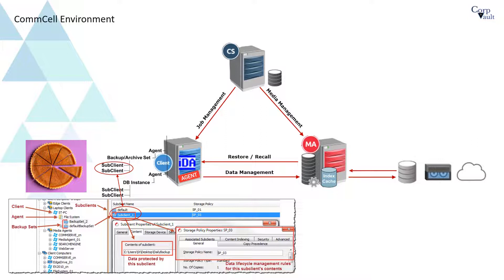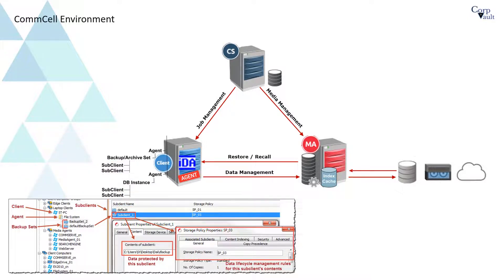Therefore, each sub-client contains a unique portion of the data and is mutually exclusive of all other sub-clients within that backup set. Multiple sub-clients allow you to backup different parts of the system in parallel, at different times, or at different frequencies. Please note, by default the index cache is made at the backup set level. If needed, you can change it to be made at sub-client level.